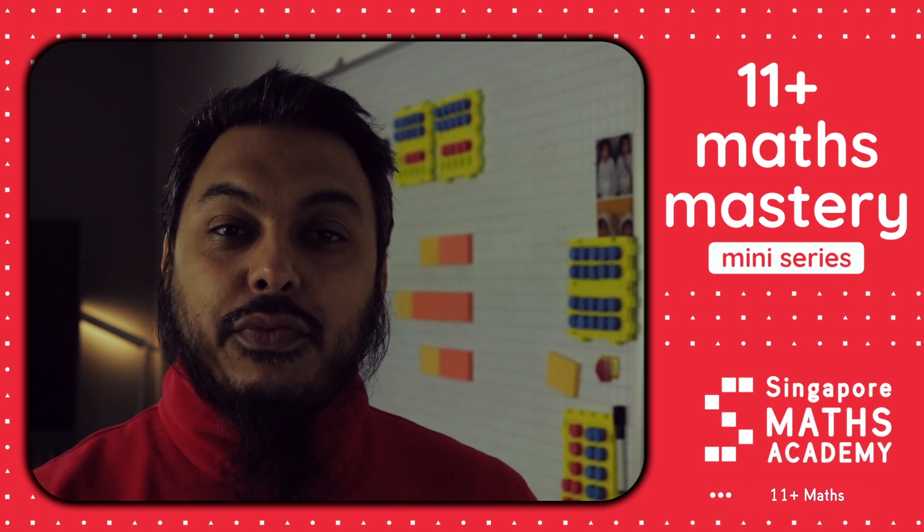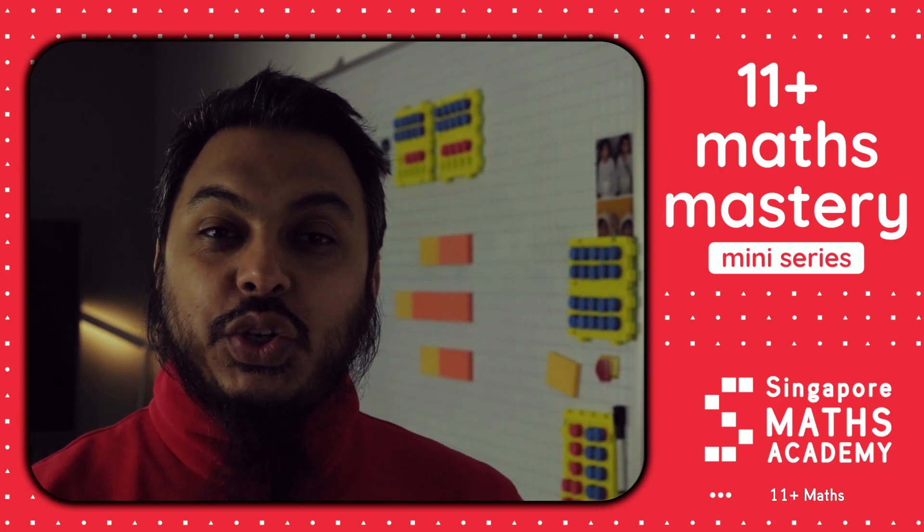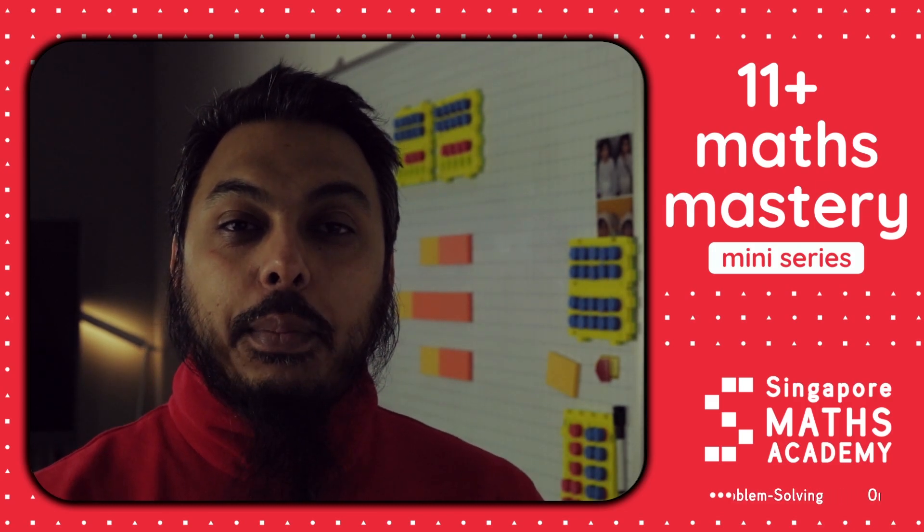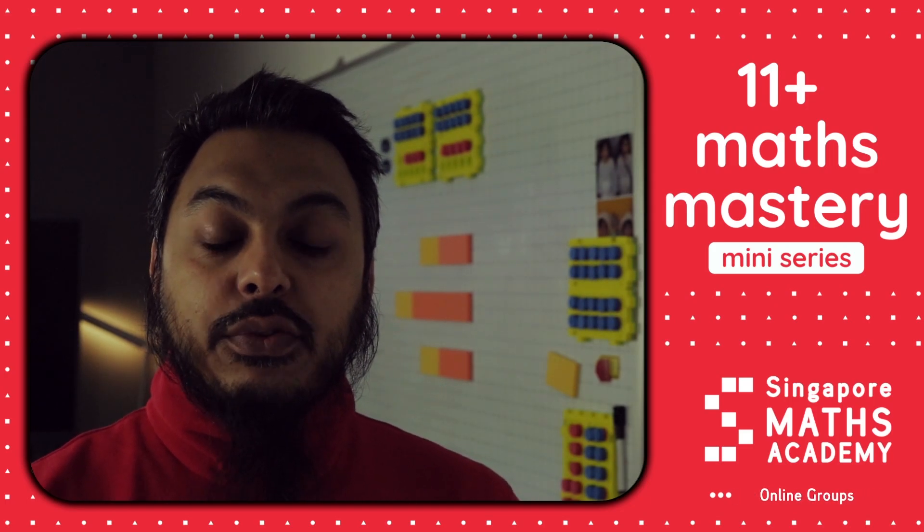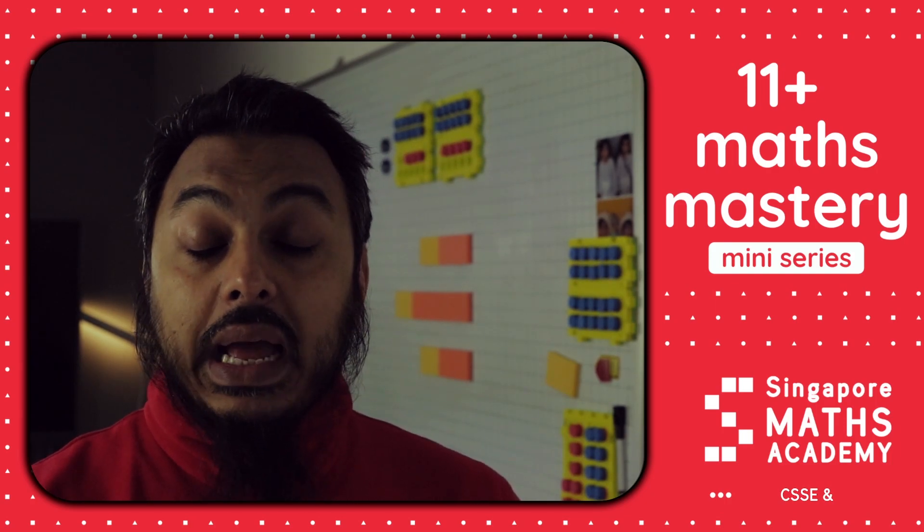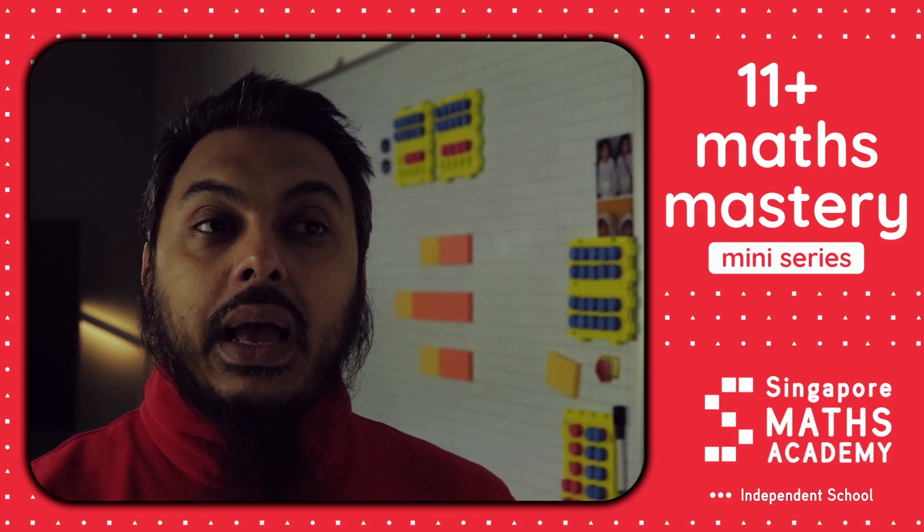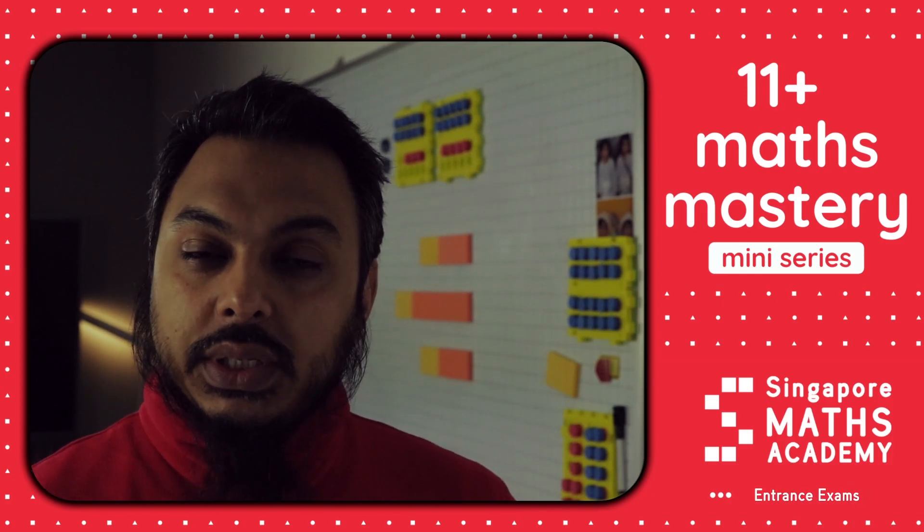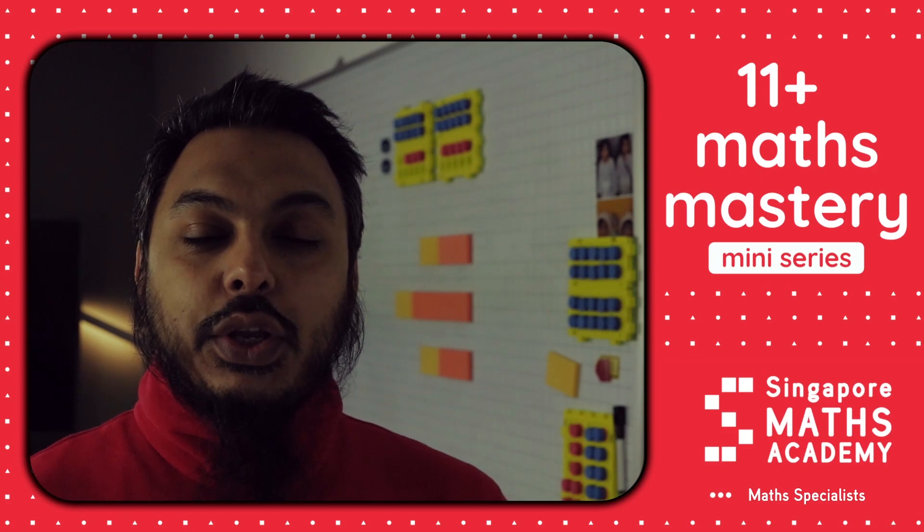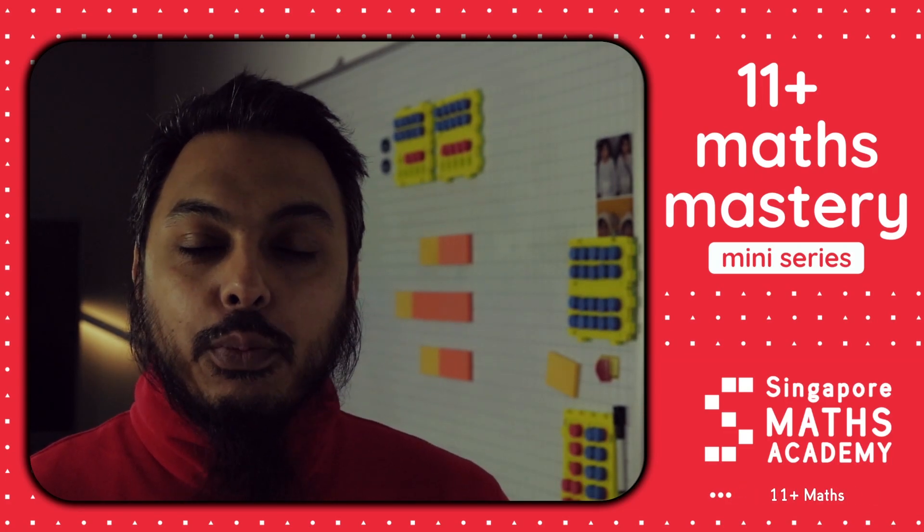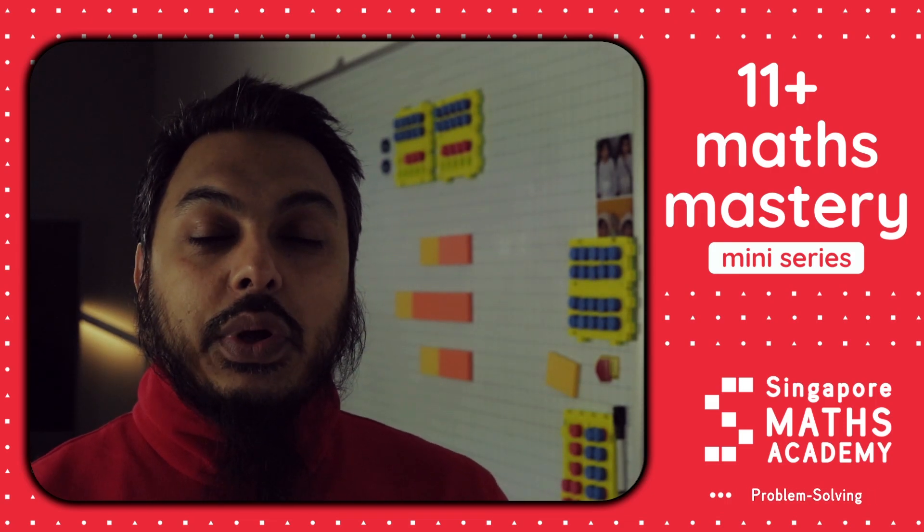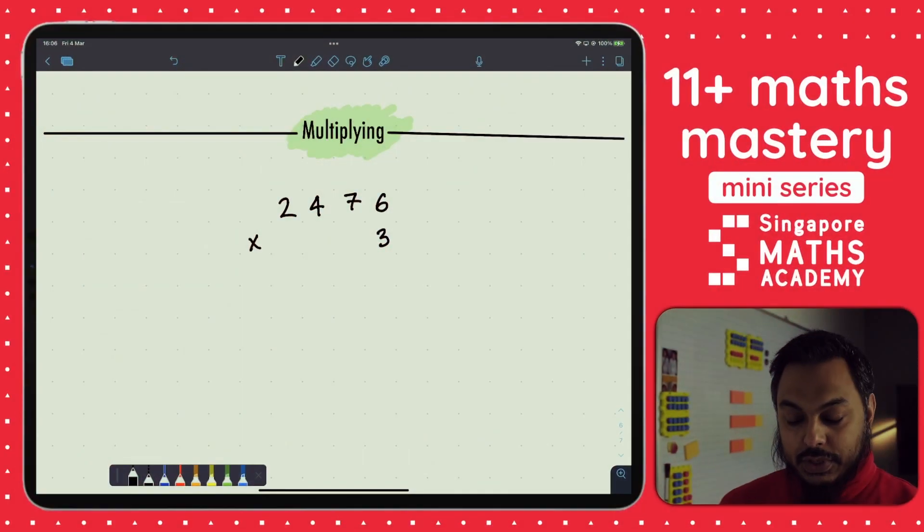Hi everyone, this is Mohiuddin Ahmed from Singapore Maths Academy, a maths tuition specialist company. We're here for our fifth video of this 11+ mini series. This video is all about multiplying. We're going to look at how to multiply with one digit number and how to multiply by a two digit number. We're going to look at this for year four onwards, but if you're in year three and you're interested, you can also have a go. The method we're going to use is the traditional more formal method of multiplying, which is also known as a column method sometimes. So we're going to get started by jumping onto our iPad.